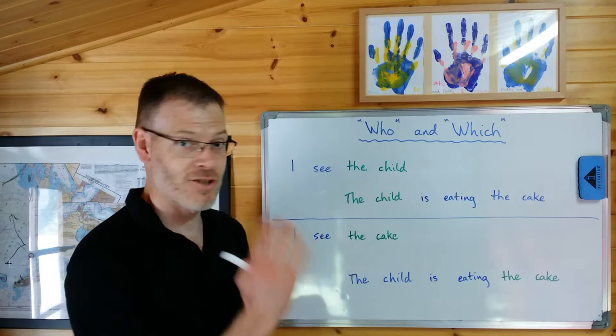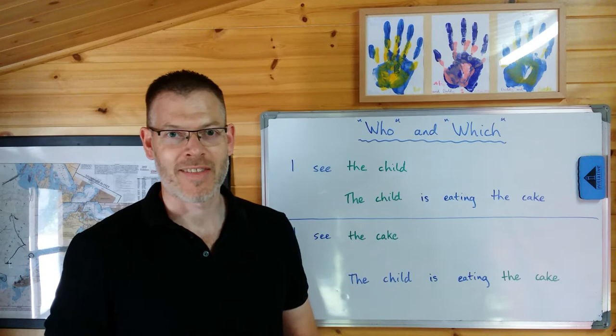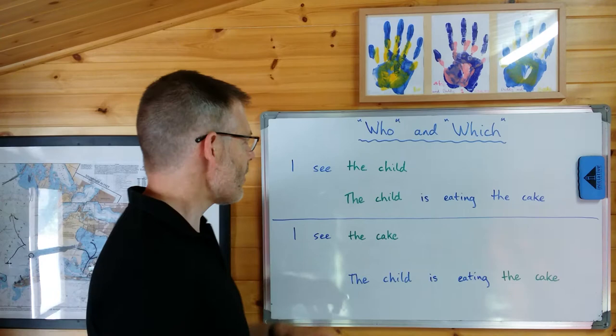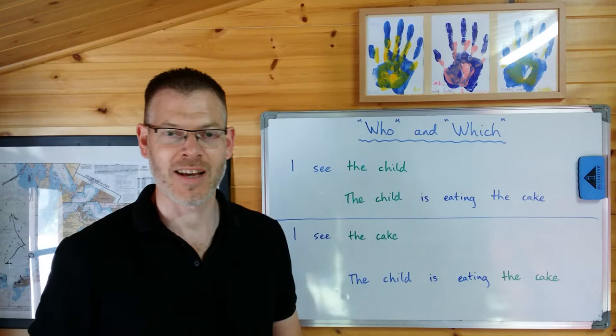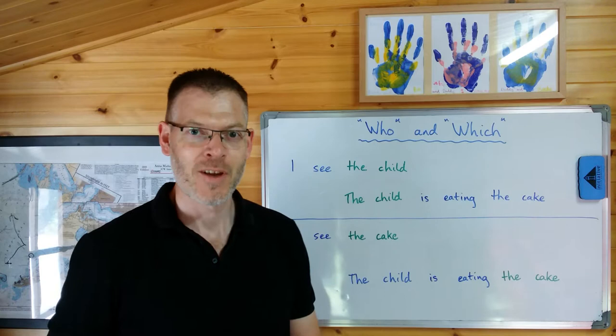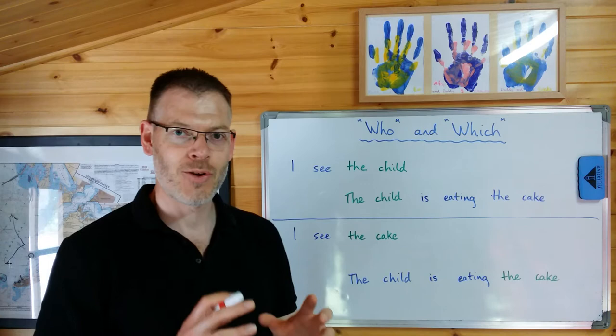I'm going to introduce a couple of key grammatical concepts here, and then we're going to do some examples together, and you'll soon see it's really not so complicated. Now, I want you to think for a second about the words 'who' and 'which'. How do we use the words 'who' and 'which' in English? Well, sometimes we use them in questions like 'who is your teacher?' and 'which cake shall I eat?' We're not talking about that use. We're talking about the use of 'who' and 'which' to join two sentences together.